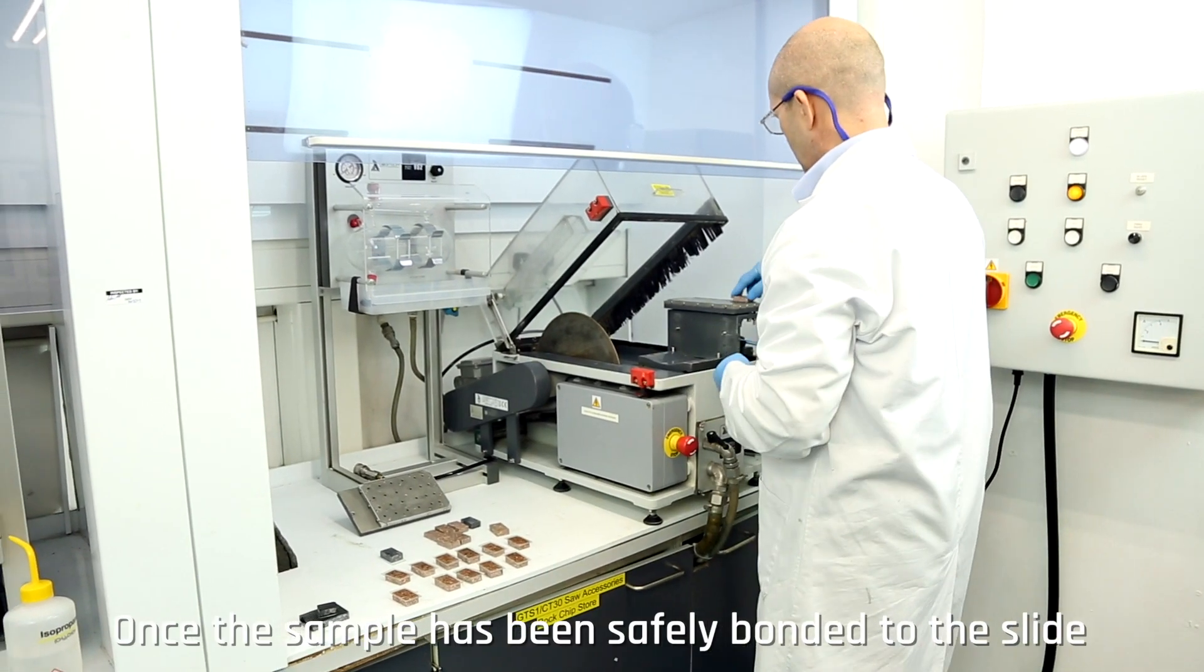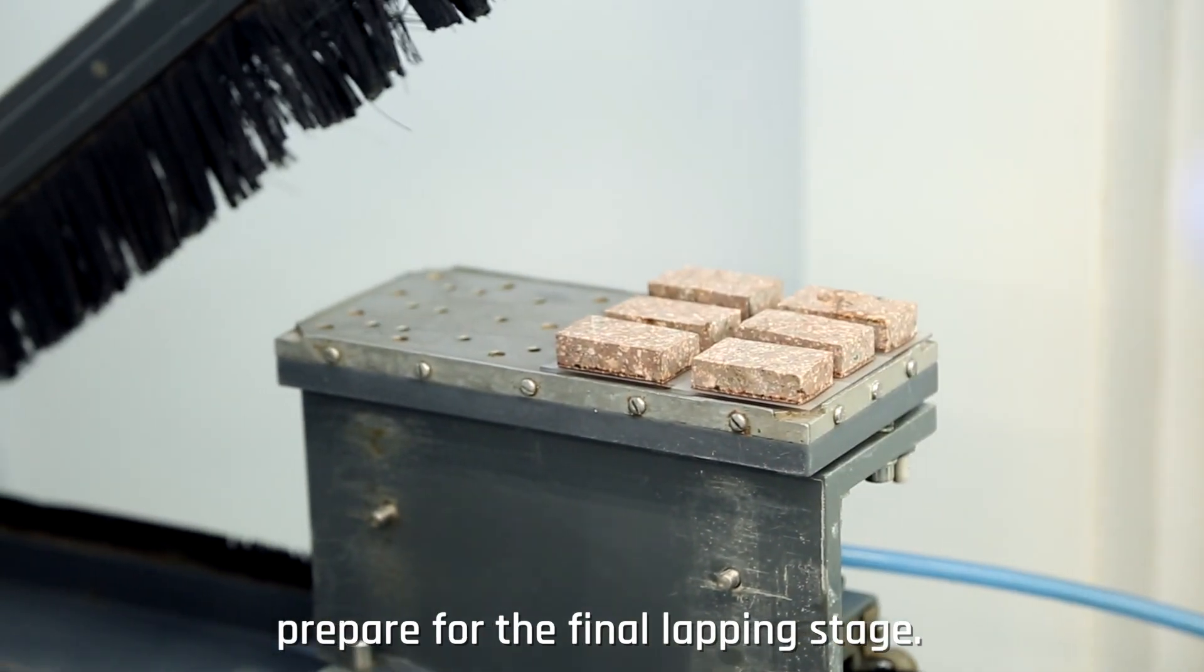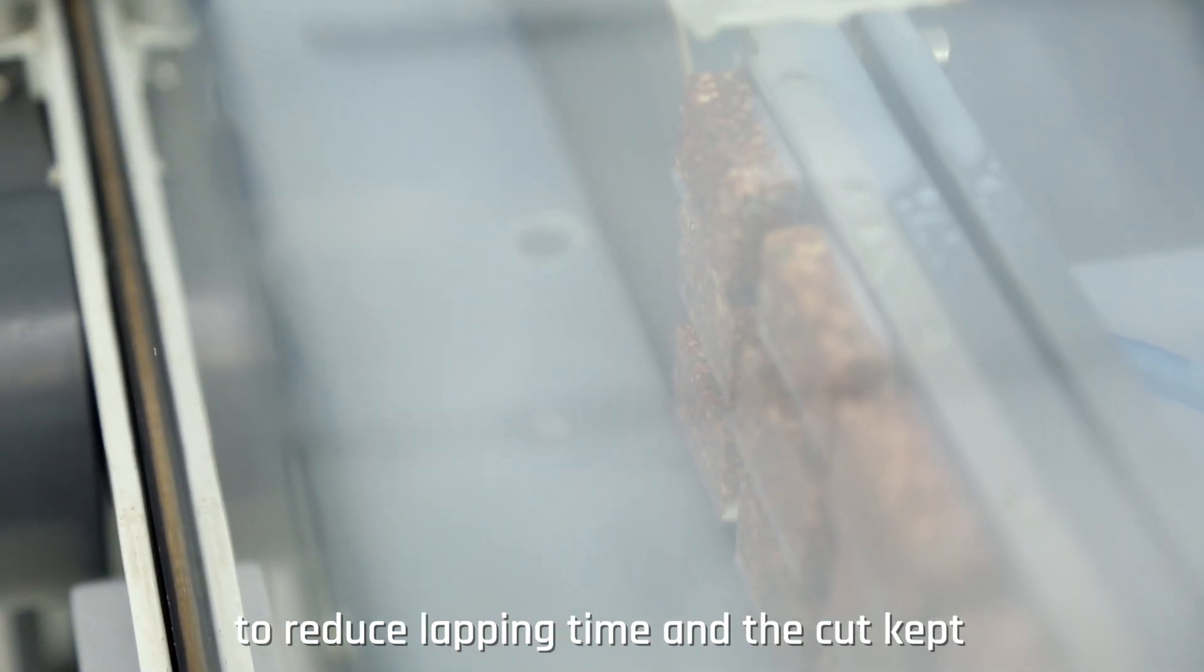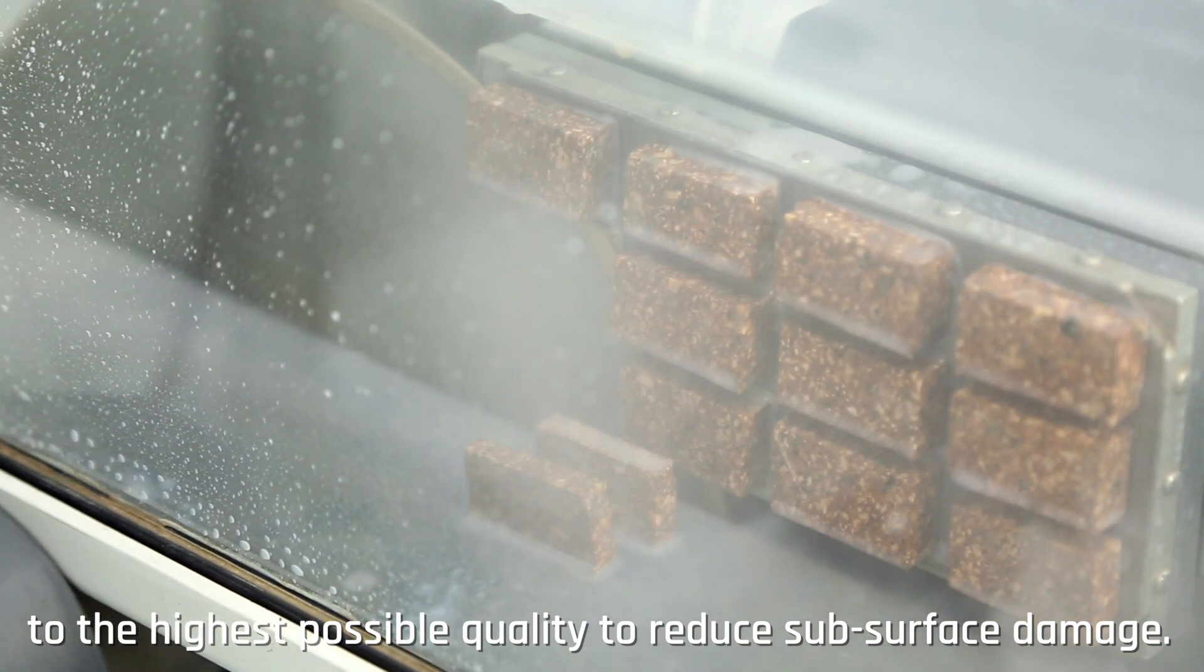Once the sample has been safely bonded to the slide, the excess sample material must be trimmed to prepare for the final lapping stage. The thinned rock sample should be as thin as possible to reduce lapping time and the cut kept to the highest possible quality to reduce subsurface damage.